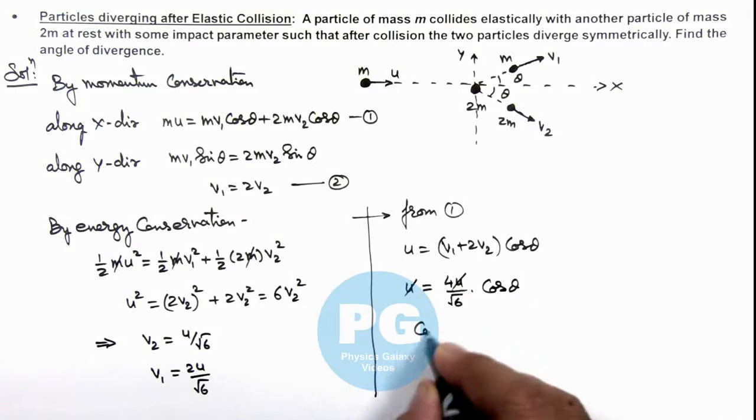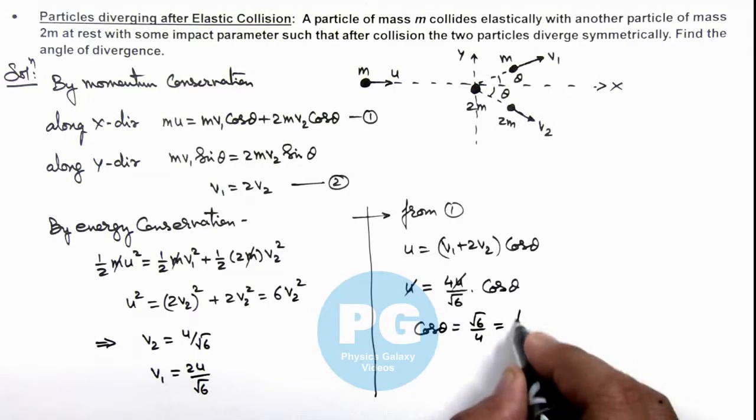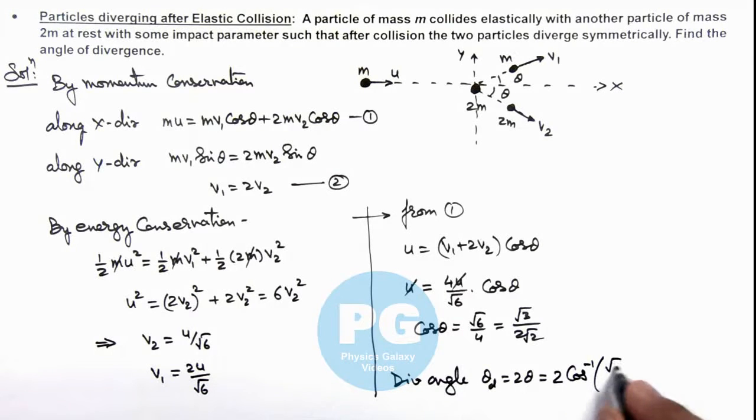Or it can also be written as √3/(2√2). So we wish to find out the divergence angle. Divergence angle in this situation can be written as θd which is twice of theta, or it can be written as twice of cos inverse of √3/(2√2). This will be the final result of this problem.